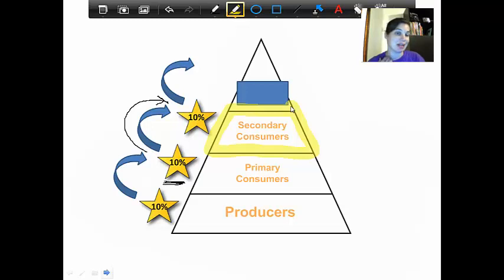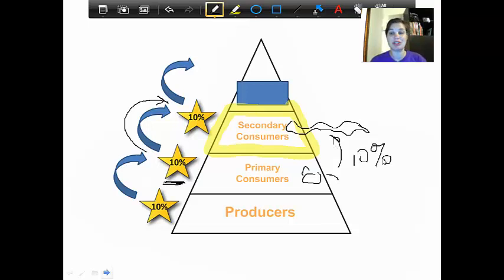Only 10% of the primary consumers' energy was passed on. So if we go back to that mouse, it only got 10% of energy from the grass, but if something like a snake were to eat that mouse, that snake is only going to get 10% of the energy of that mouse. So with each step upward, we're getting less and less energy.